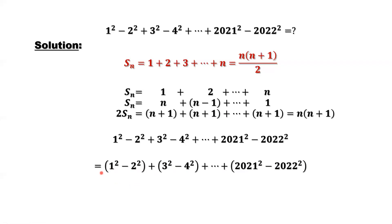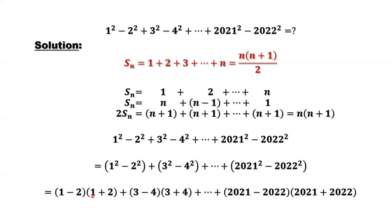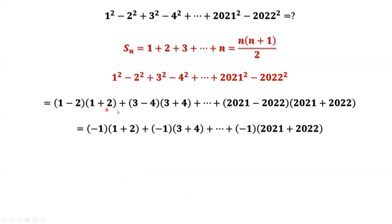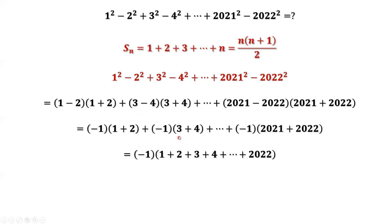Next, we are going to use the difference of squares formula. Look inside each parenthesis — that's a squared minus b squared. The formula is: a squared minus b squared equals (a minus b)(a plus b). For each group, a minus b gives: 1 minus 2 is negative 1, 3 minus 4 is negative 1, and 2021 minus 2022 is negative 1. So every group has a factor of negative 1 out front. We factor out negative 1, leaving the sum: 1 plus 2, plus 3 plus 4, plus 5 plus 6, until 2021 plus 2022.